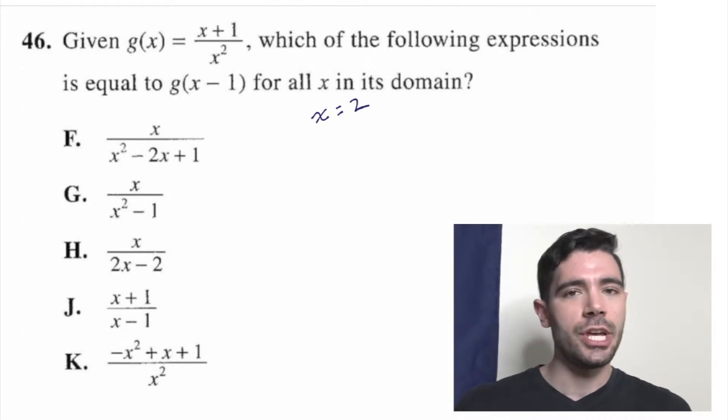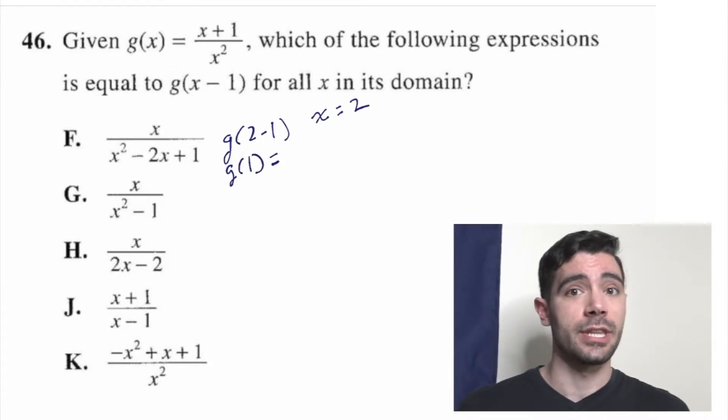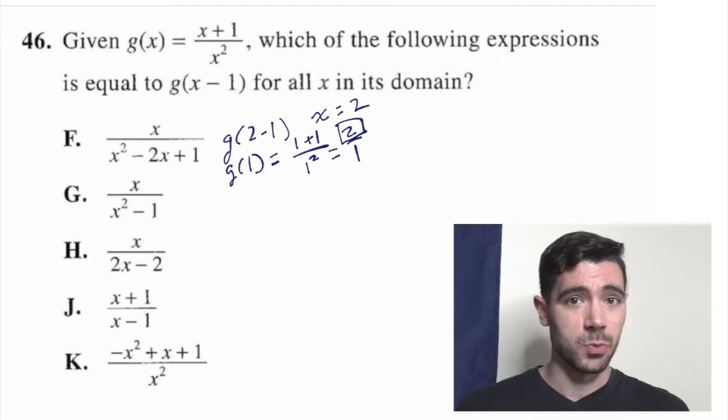So then we would have g(2-1), which would be the same as g(1). We go back to the original function they gave us, and we put 1 in wherever it said x. So that would give us (1+1) over 1 squared, or 2 over 1. So apparently in the function g(x-1), when x is 2, the output is also 2. Okay, so let's put in 2 for x into all of the answer choices, and cross off the ones that don't give us 2.